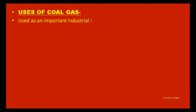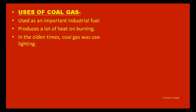Coal gas is used as an important industrial fuel because it produces a lot of heat on burning. In the olden times, coal gas was used for street lighting as it produces a luminous flame on burning.